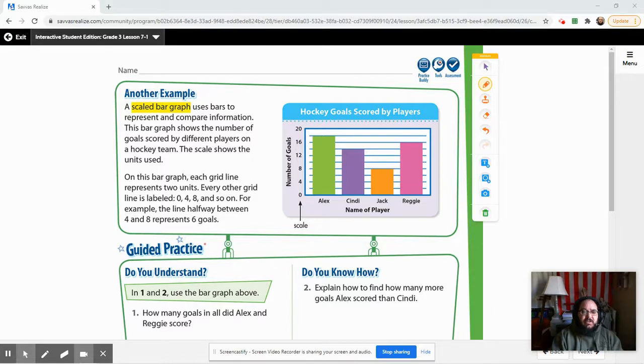Now, I always tell you guys to underline or highlight or circle the important information when you're reading through the instructions, and it's also very important to read through the instructions carefully. In this case, they already highlighted it, but I'm going to go ahead and underline it anyway, the scaled bar graph. The scaled bar graph uses bars to represent, which means to show and compare information. So you can look at the differences between different types of information, or in this case, what we might call data, okay?